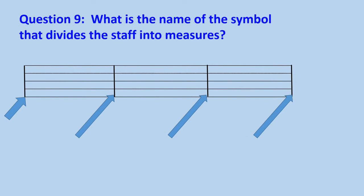Question nine: What is the name of the symbol that divides the staff into measures? Remember to raise your hand or think in your head, don't yell out. If you said bar line, you're a rock star.